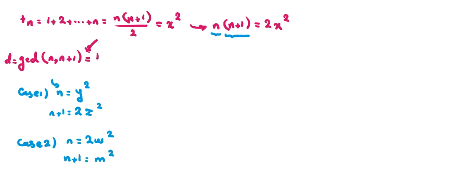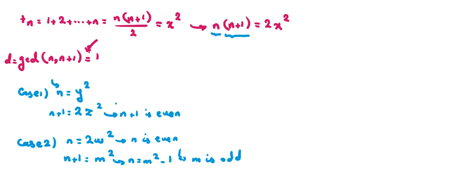In Case 1, n = y² is odd (since n+1 is even). In Case 2, n = 2w² is even, so m² = n+1 is odd, meaning m is odd. So in both cases, either n is the square of an odd number, or n is an odd square minus one. We should focus on odd squares.